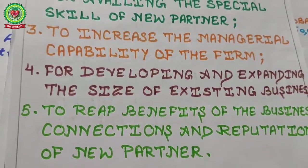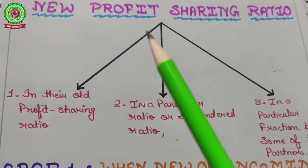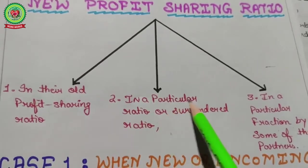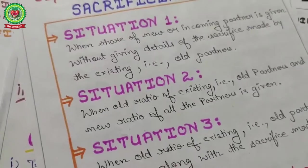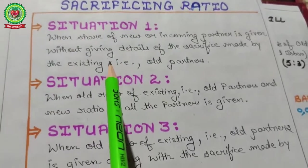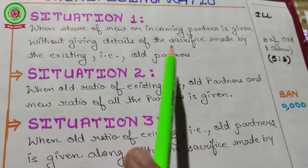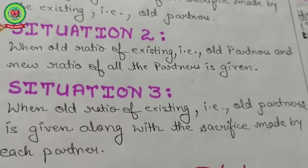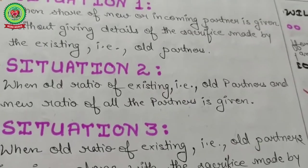In my first lecture I discussed how to compute the new profit sharing ratio — on the basis of old partner sharing ratio, in a particular ratio or surrender ratio, or in a particular fraction by some partners. In my second lecture I discussed how to compute the sacrificing ratio: old ratio minus new ratio, under three situations — when sacrifice made by existing partner is not given, when old and new both ratios are given, and when old ratio along with sacrifice made is given.